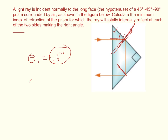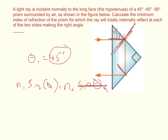Now we can use Snell's Law: N1 times the sine of the critical angle theta_C equals N2 times the sine of theta_2, which is 90 degrees. The sine of 90 equals 1, so that cancels out. We get N1 times sine of the critical angle equals N2, and we want our critical angle to be at least 45 degrees. So N1 times sine of 45 equals N2.